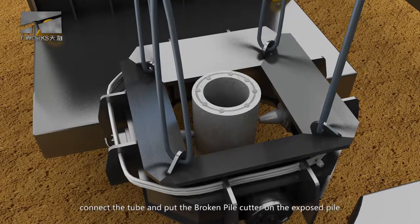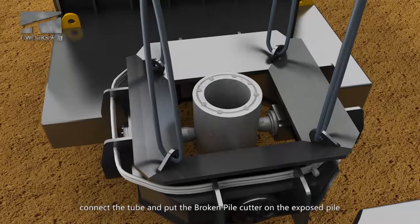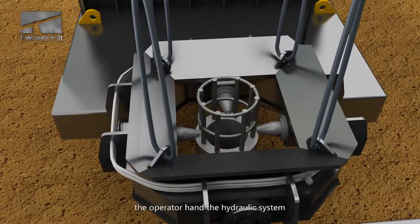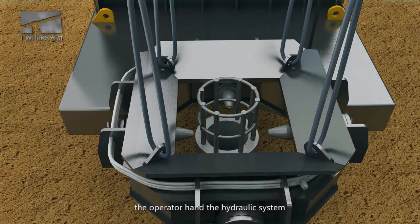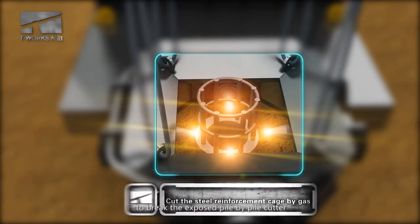Secondly, connect the tube and put the broken pile cutter on the exposed pile. Thirdly, the operator handles the hydraulic system to increase the pressure to make the cylinder stretch out to break the exposed pile by pile cutter.